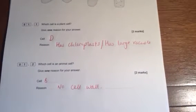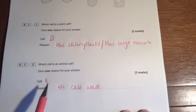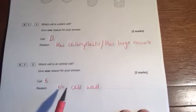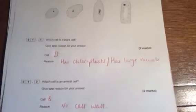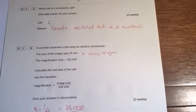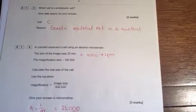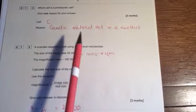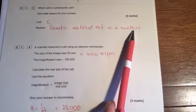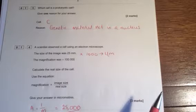Cell D is a plant cell. This is because it either has chloroplasts or has a large vacuole. So you get one of these reasons and then D gets you one mark as well. Which cell is an animal cell? Cell B is an animal cell because it doesn't have a cell wall.